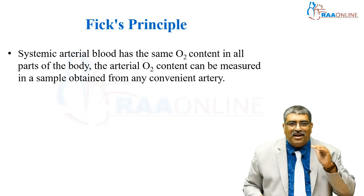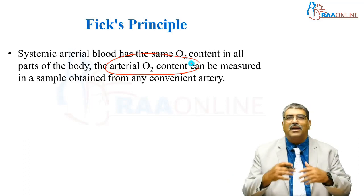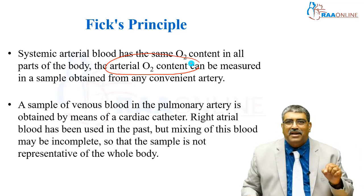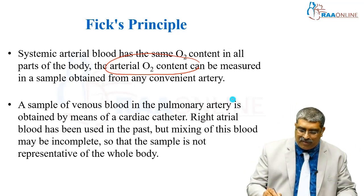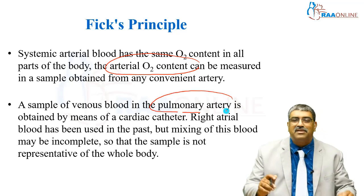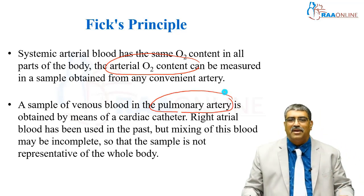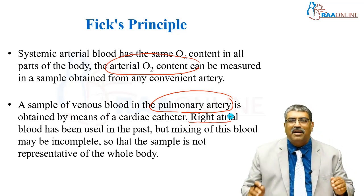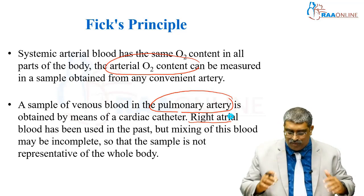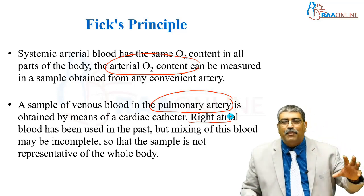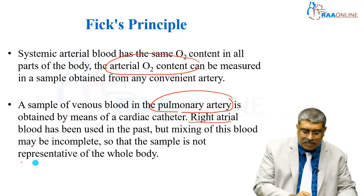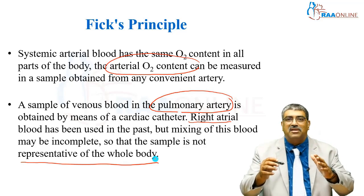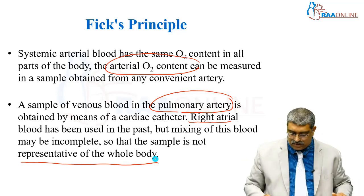For getting the arterial oxygen content, you can take a sample from any convenient artery. For taking the venous sample, ideally you should take from the pulmonary artery, which is the endpoint of the venous system. If you take blood from the right atrium, some mixing can happen and may not reflect the true value. Ideally, the sample taken from the pulmonary artery is representative of the whole body — that is the difference between mixed venous oxygen saturation and central venous oxygen saturation.